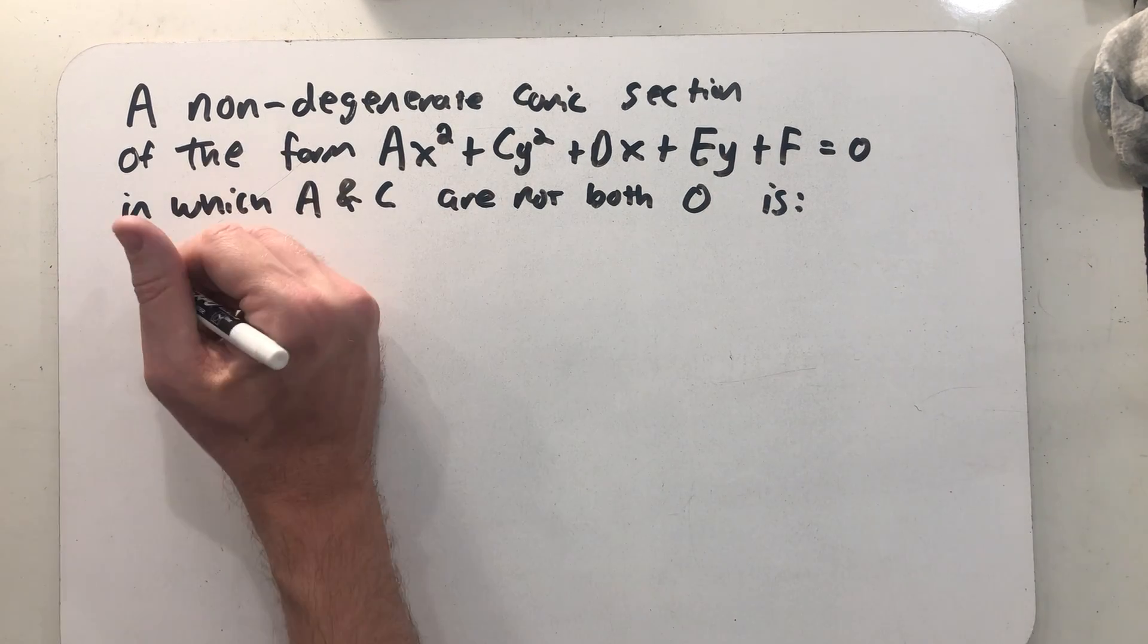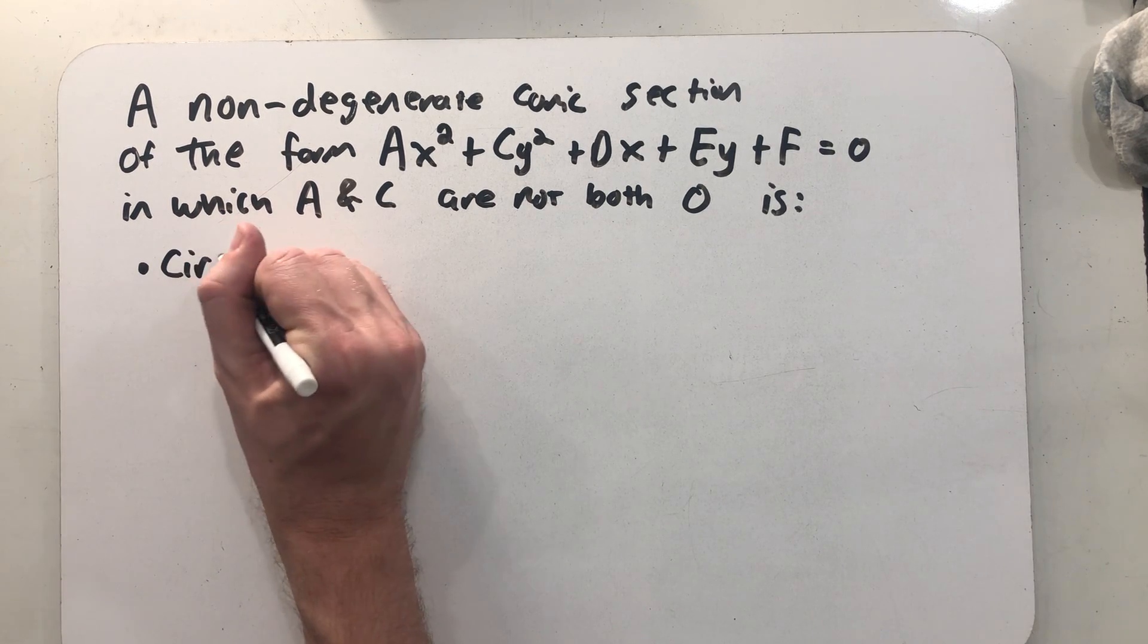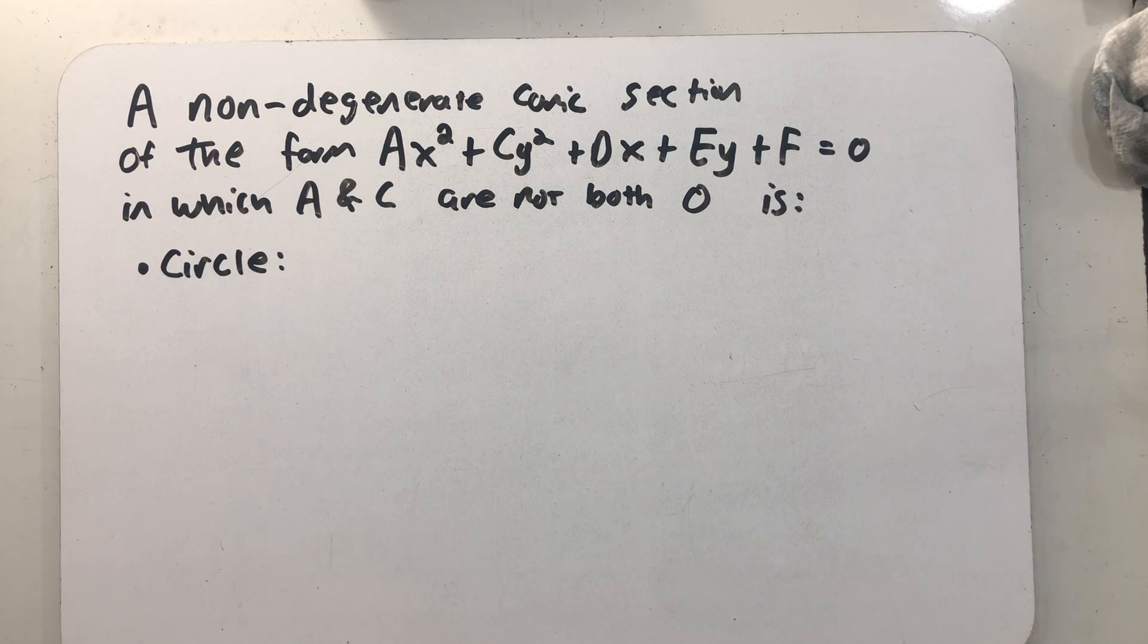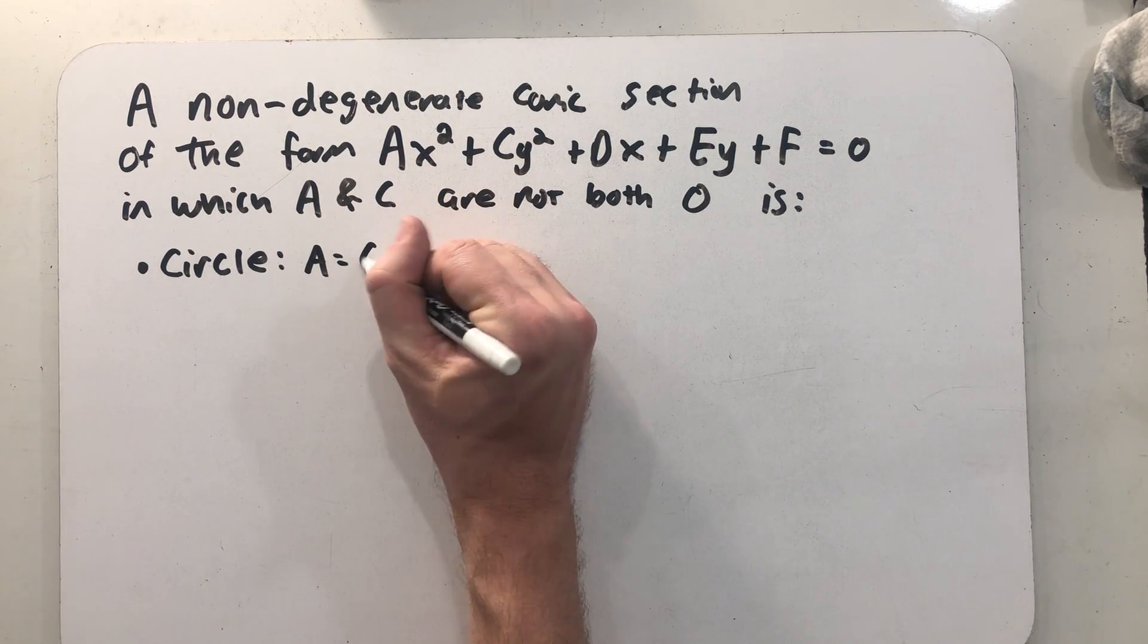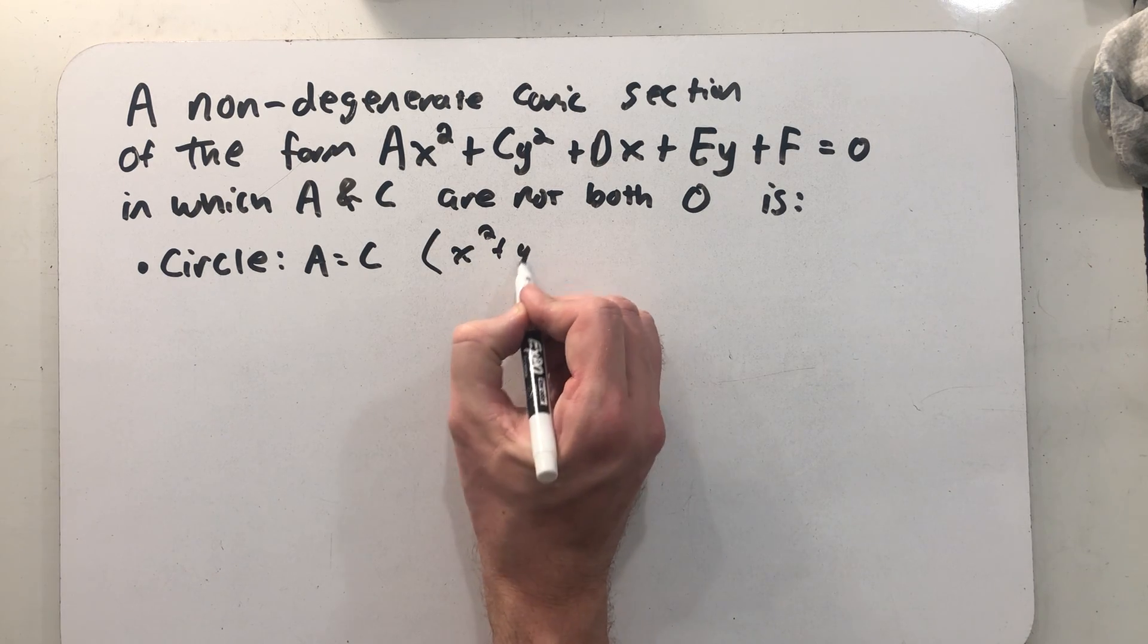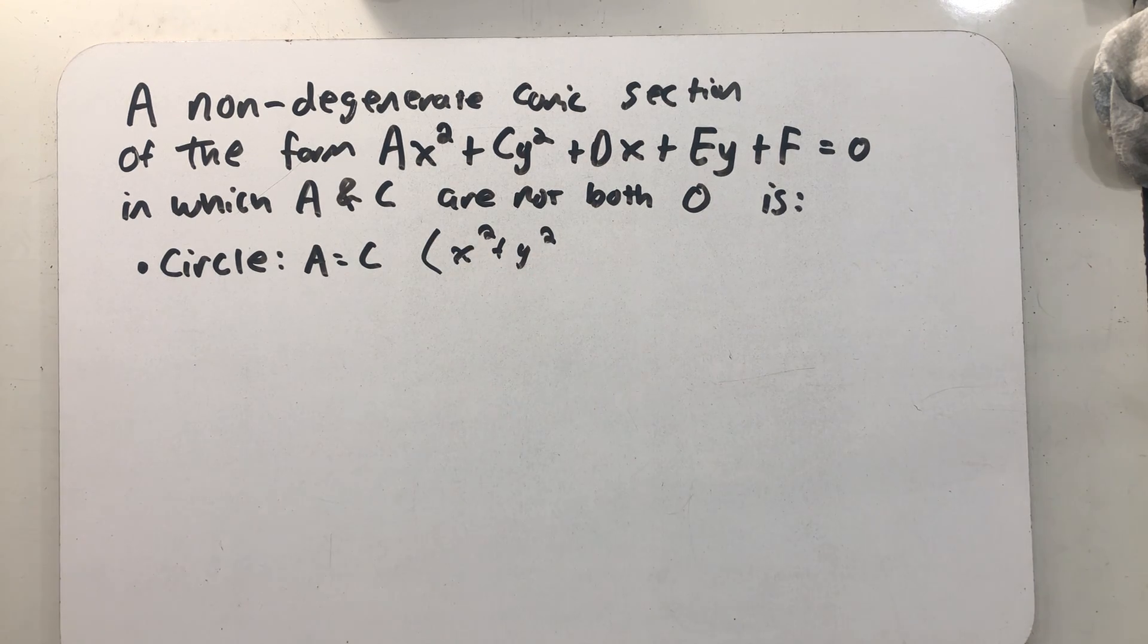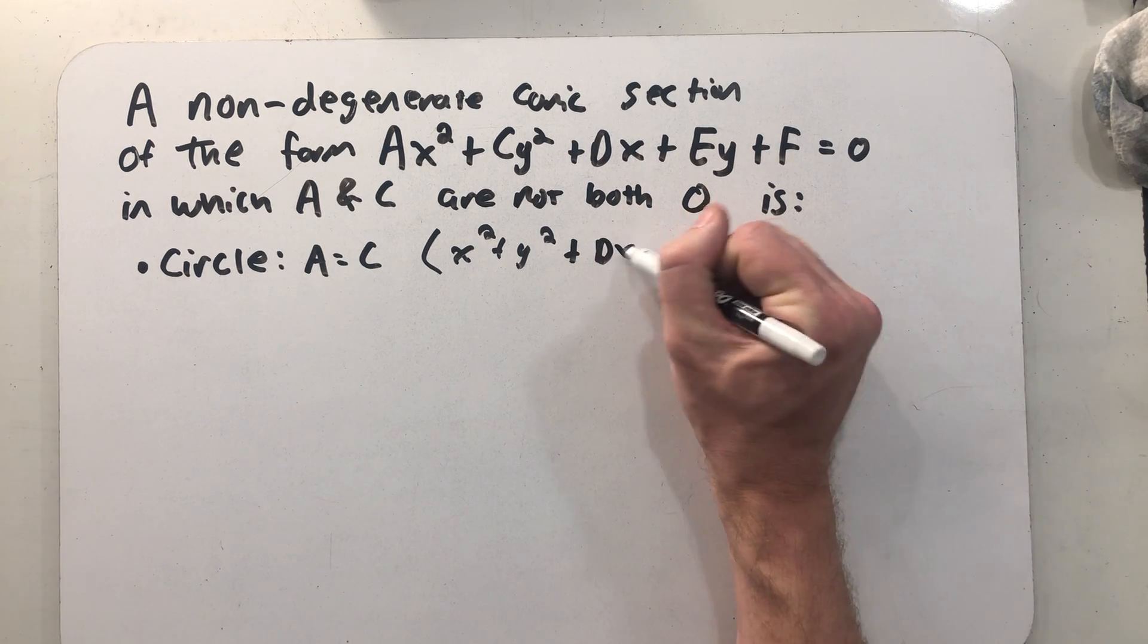All right, so let's first think about what has to be true about a and c to have a circle. Well, it turns out that means a and c have to be the same. We're actually probably more comfortable thinking about the equation of a circle in standard form just having 1x squared plus 1y squared plus constants.